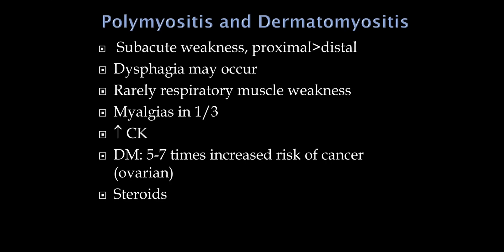Starting with inflammatory myopathies: polymyositis and dermatomyositis both present with subacute weakness, generally over weeks to a few months. It's more proximal muscles, and because the esophagus has skeletal muscle, these patients can have dysphagia. Respiratory failure is extremely rare. About a third of patients have myalgias. Because this is quite active, creatine kinase is significantly elevated in both conditions.